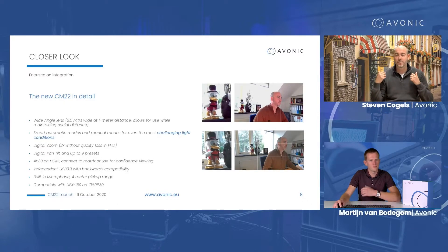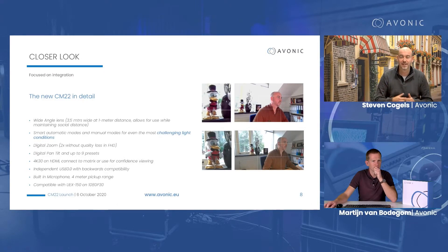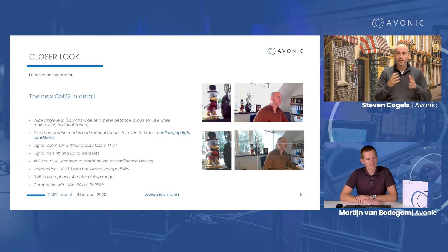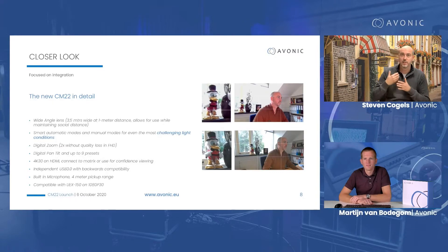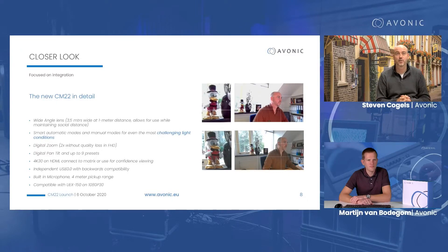Challenging light conditions — light from the back, lots of light in the room, people walking around — require camera control. Especially in today's corporate world with more fishbowl-type meeting rooms with lots of glass and transparency, you need a camera that can handle that application well. The CM22 has a controllable digital zoom, so you can configure the amount of zoom you allow. Because it's a 4K camera, you can zoom in twice before reaching full 1080p — meaning you can zoom in twice without losing any picture quality. It also has digital pan and tilt, plus up to nine presets including a configurable home preset.